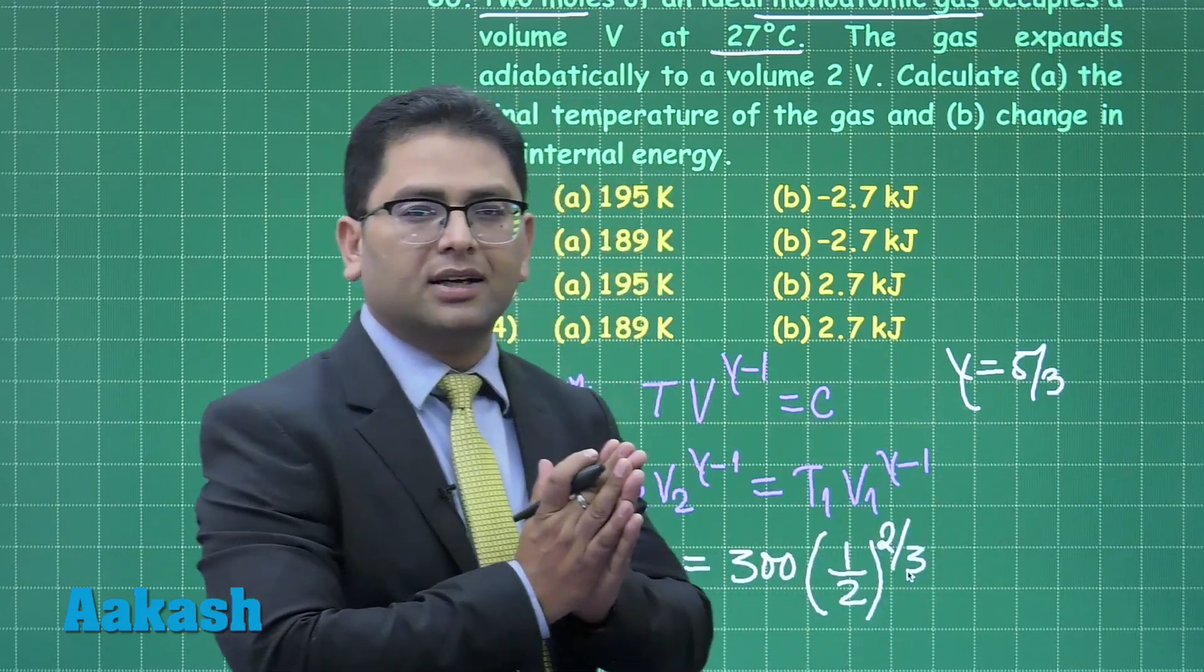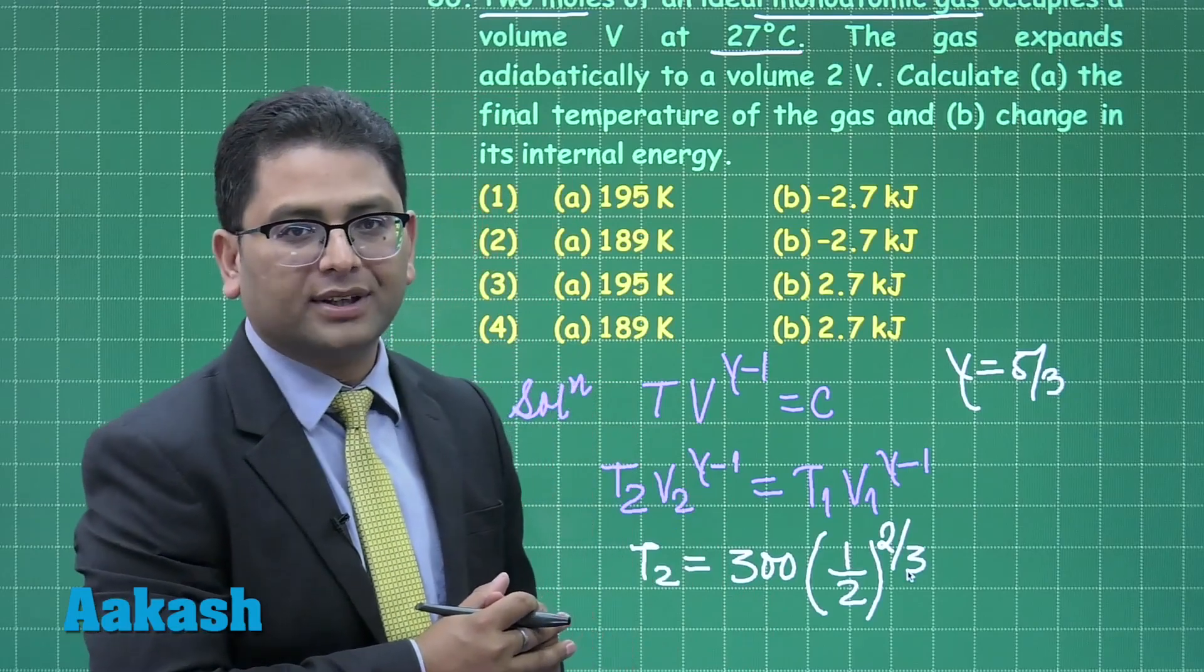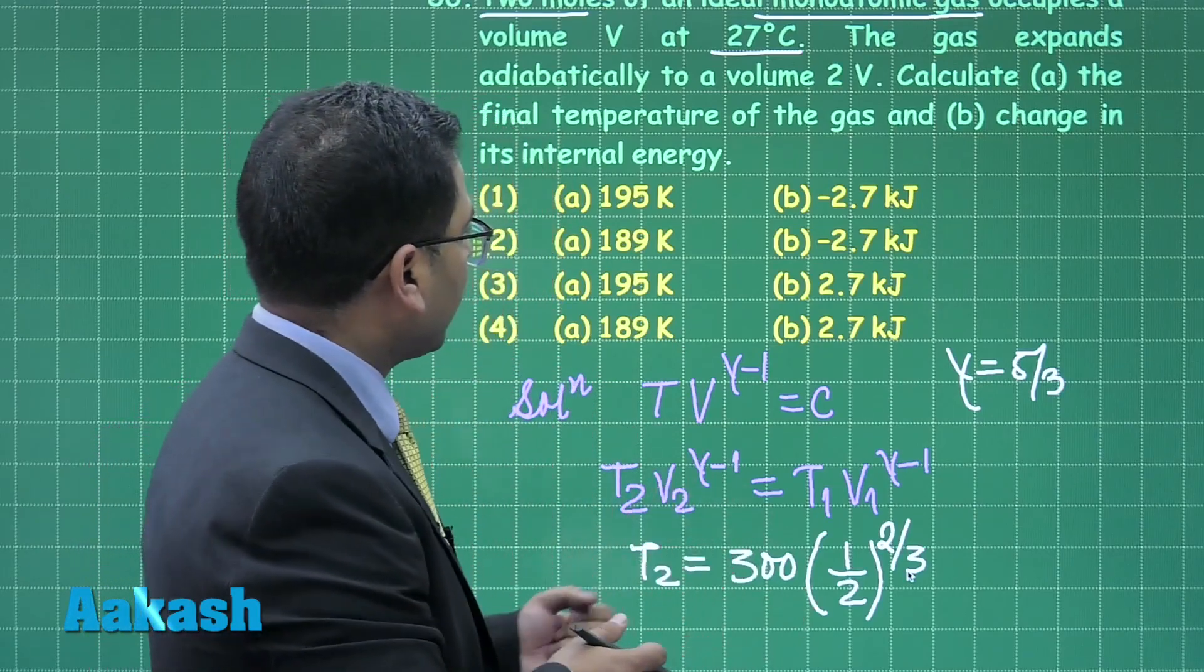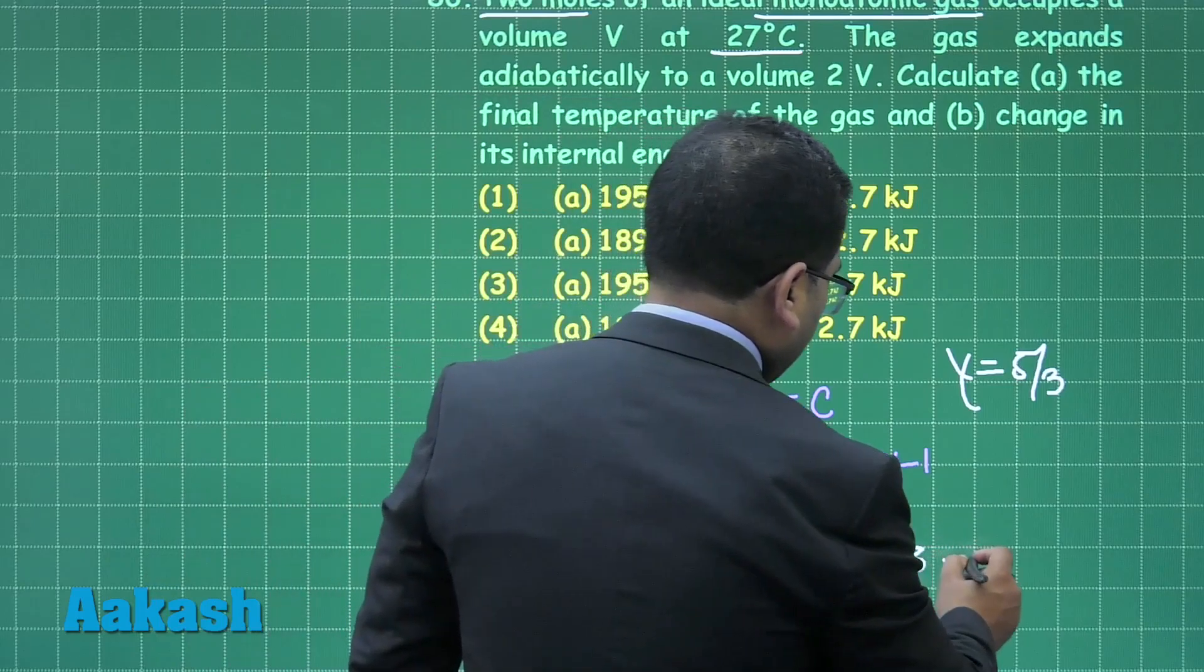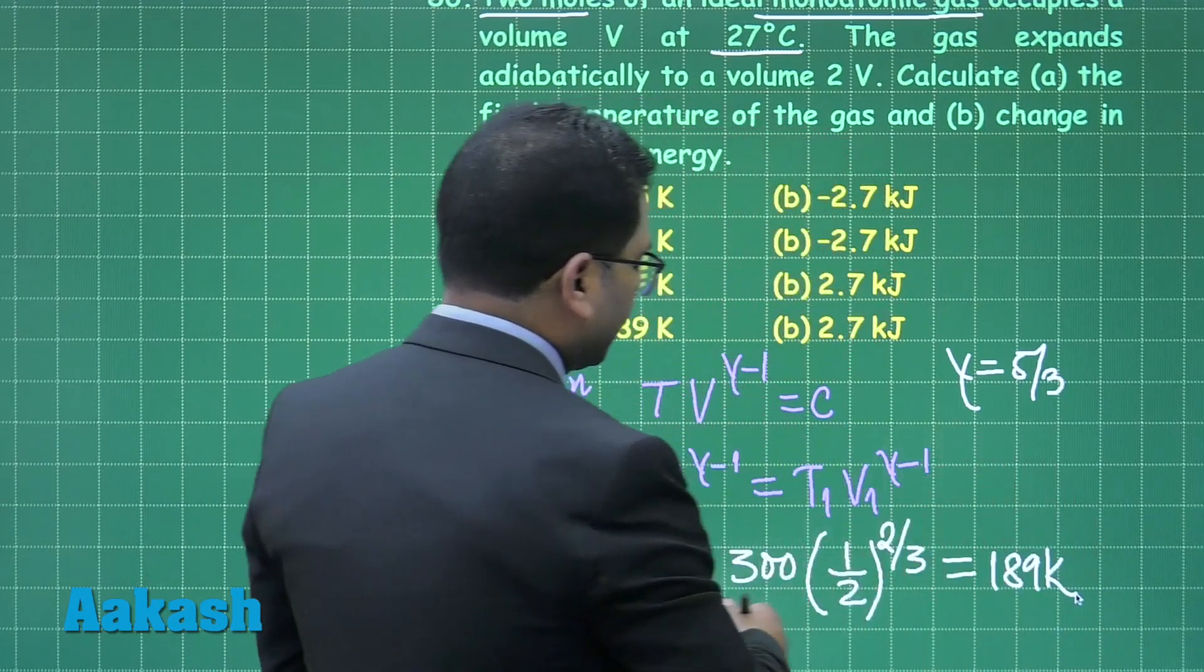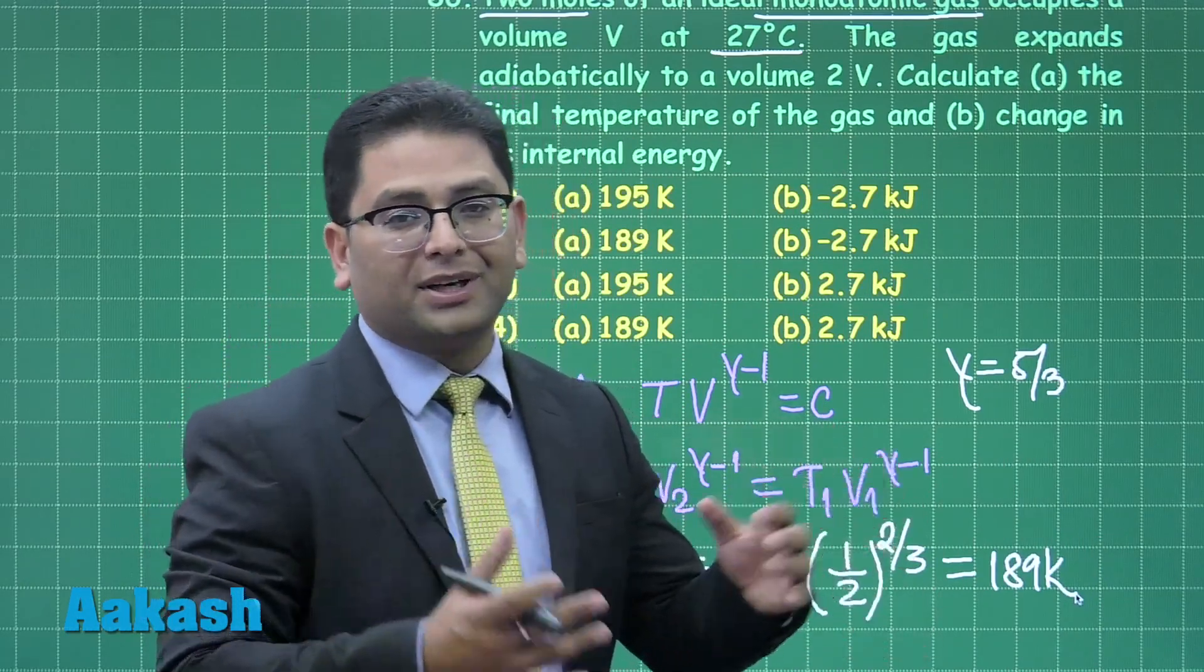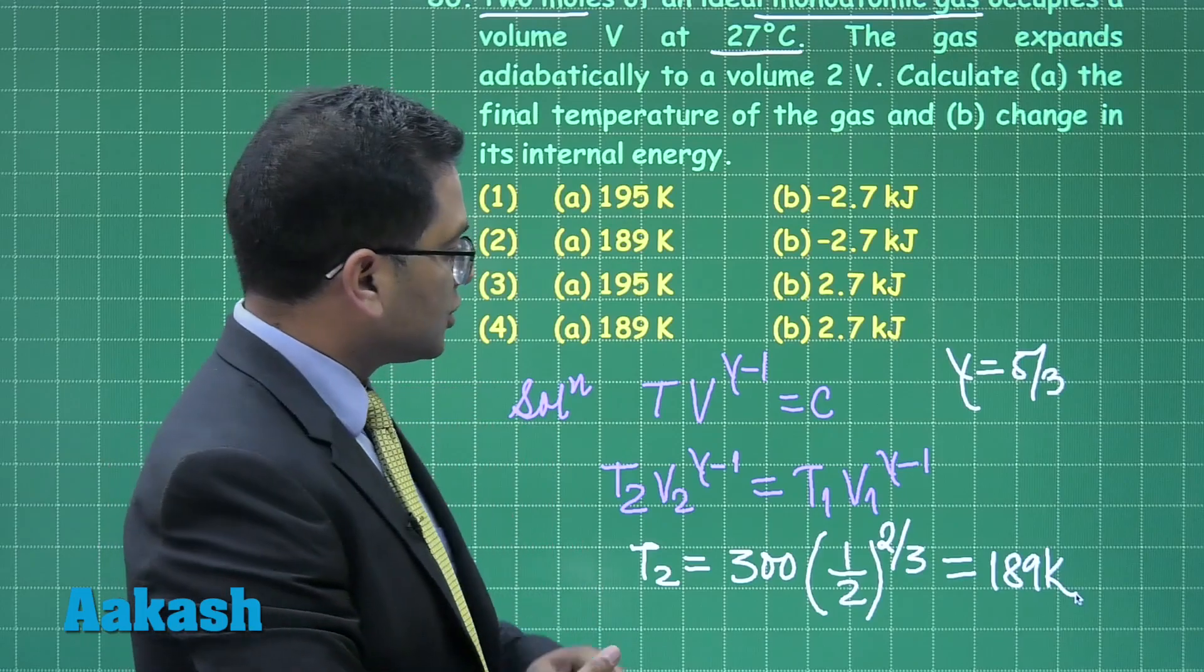You can just do it by hit and trial. It comes around 1.6, and when you put the value, you see the temperature comes as 189 Kelvin. I do agree that the calculation would not be so abrupt, but yes, with a small bit of effort you can do so. The temperature has been calculated to be 189 Kelvin.